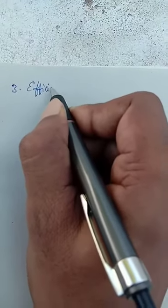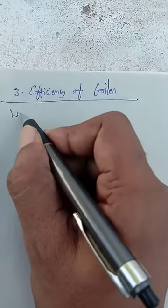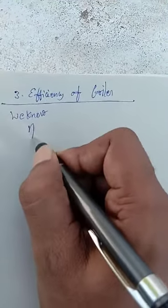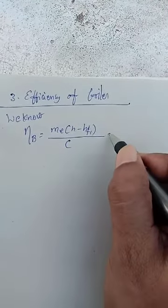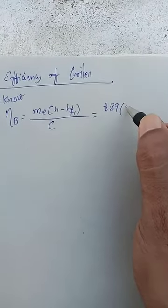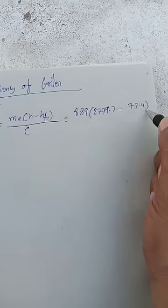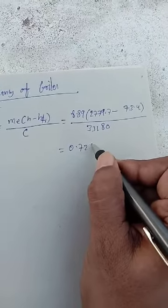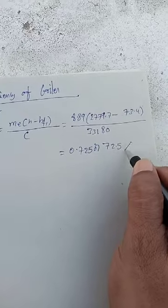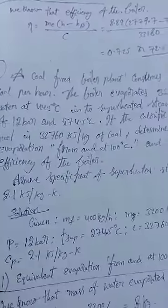Now we go to find the efficiency of the boiler. Boiler efficiency = Me × (H − HF1) / C. Substituting all values including the given calorific value C, we get the answer — 72.5%. This is the answer, and now we are going to see another problem.